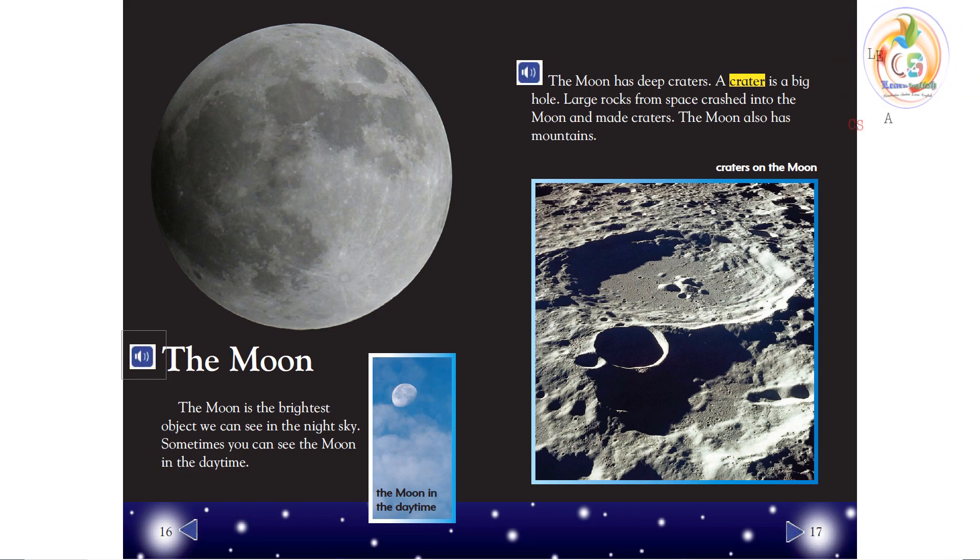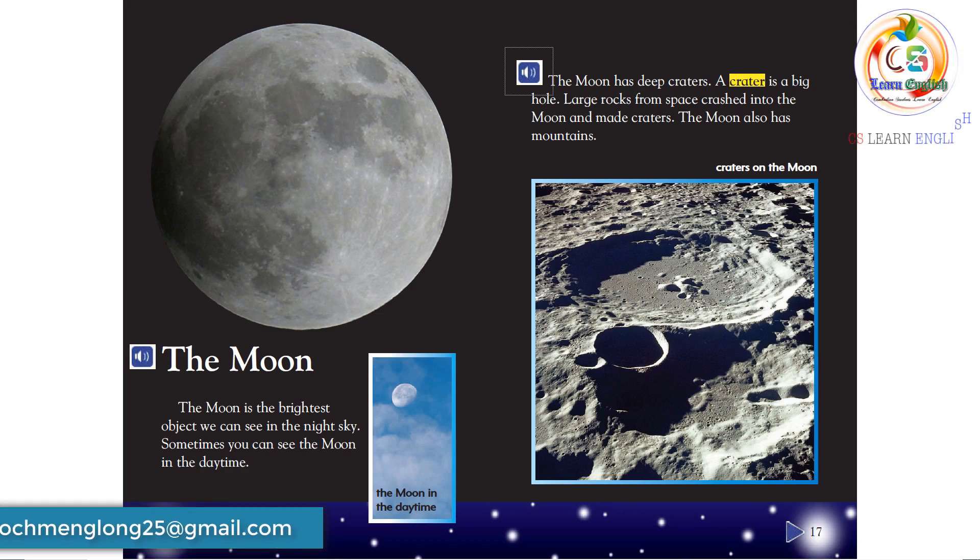The Moon is the brightest object we can see in the night sky. Sometimes, you can see the Moon in the daytime. The Moon has deep craters. A crater is a big hole. Large rocks from space crashed into the Moon and made craters. The Moon also has mountains.